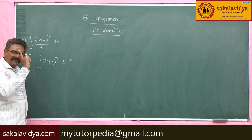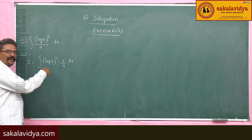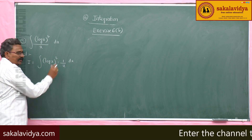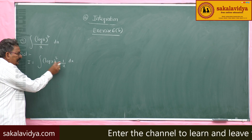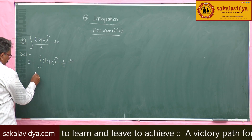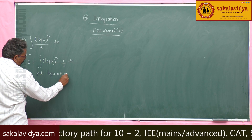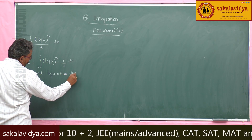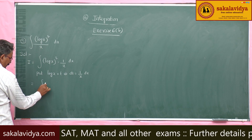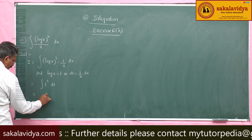If you say log x is equal to t, then the derivative of t will be 1/x. So log x derivative is 1/x. That means, put log x equal to t, which implies dt is equal to (1/x) dx. So this becomes the integral of t² dt, which equals t³/3.